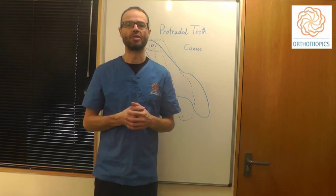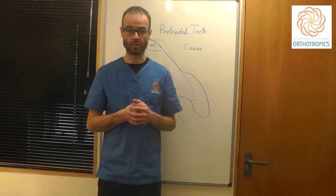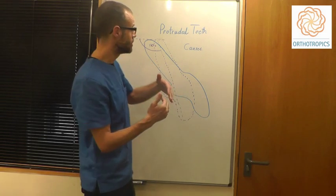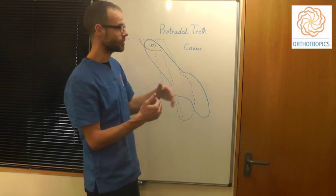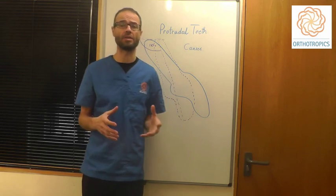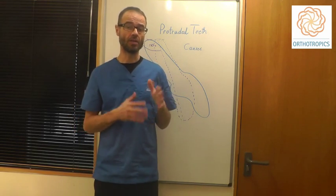What's the cause of protruded teeth or dental protrusion? Protruded teeth is the teeth sticking forwards. We know that teeth sit in a balance between the tongue and the lips.